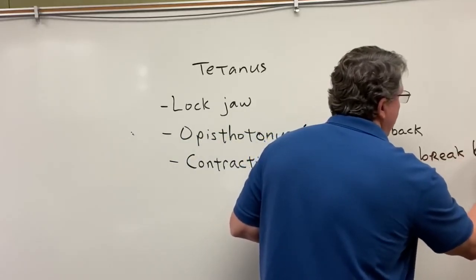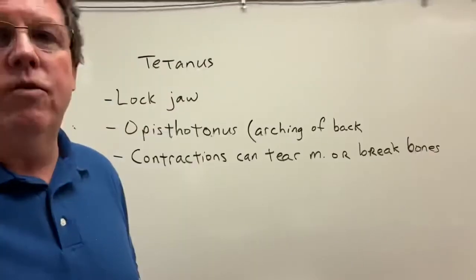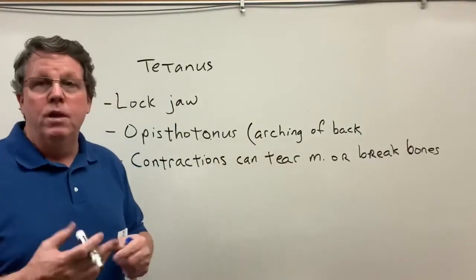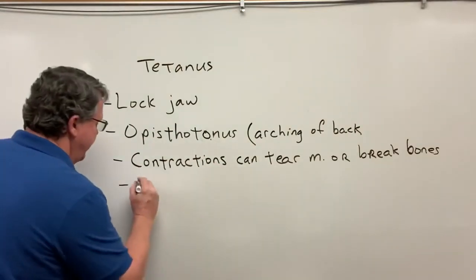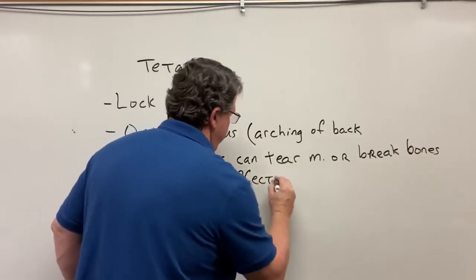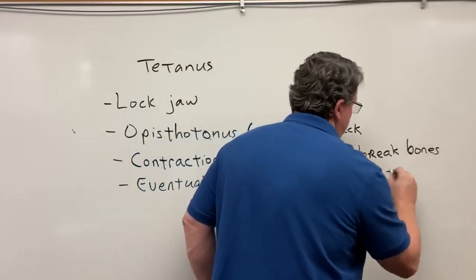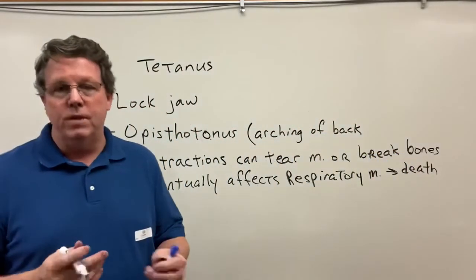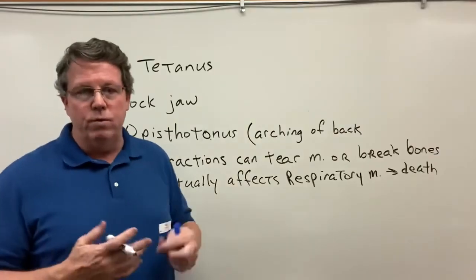Once symptoms start, tetanus is largely untreatable. What they do is put people to sleep and wait until the disease runs its course. Eventually the contractions will affect the respiratory muscles — the skeletal muscles between the ribs — and when they do, the person dies. Some books say it can also affect cardiac muscle, while others say it only affects skeletal muscle.